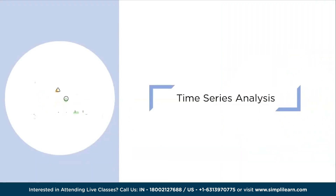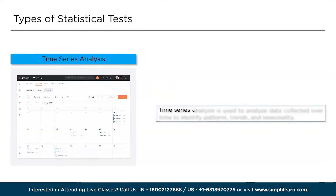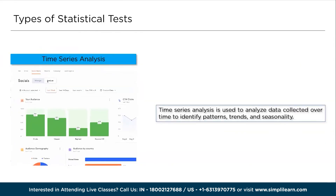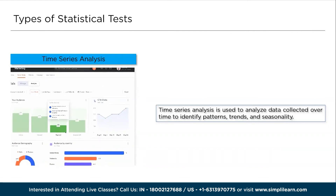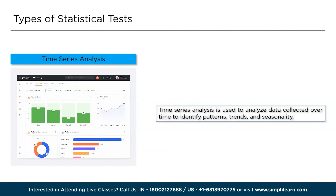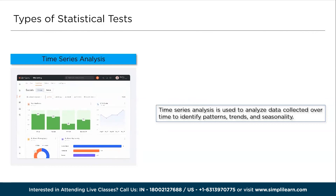Next, we have time series analysis. Time series analysis is a statistical technique used to analyze and model data that is collected over time at regular intervals. It focuses on understanding patterns, trends, and dependencies within the time series data. The analysis involves exploring the temporal structure, identifying seasonality, detecting trends, and examining autocorrelation. Time series models such as ARIMA (auto-regressive integrated moving average) and exponential smoothing are used to forecast future values based on historical patterns.